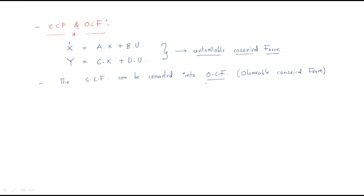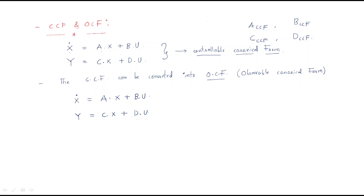Both controllable and observable canonical forms are similar but with a small modification. Both represent the same equations x-dot = Ax + Bu and y = Cx + Du, but there is a small difference: the A, B, C, D here are Controllable Canonical Form matrices, while the other A, B, C, D are Observable Canonical Form matrices.